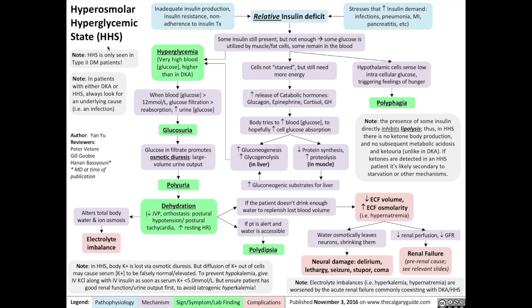HHS is another serious complication of diabetes, but unlike DKA, it is only seen in type 2 diabetic patients. We'll see why as we move along in this flowchart. Unlike diabetic ketoacidosis, HHS is caused by a relative insulin deficit, not an absolute insulin deficit.